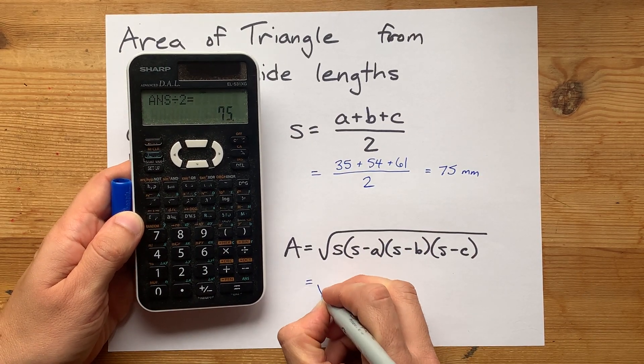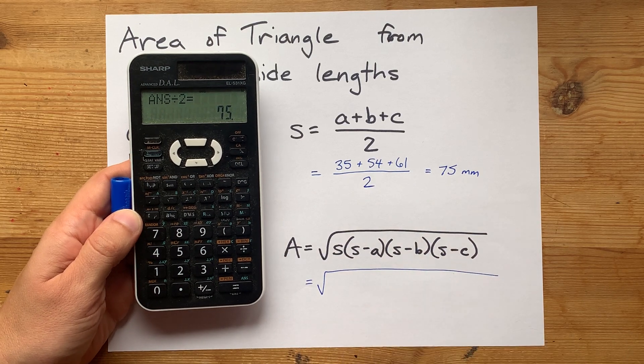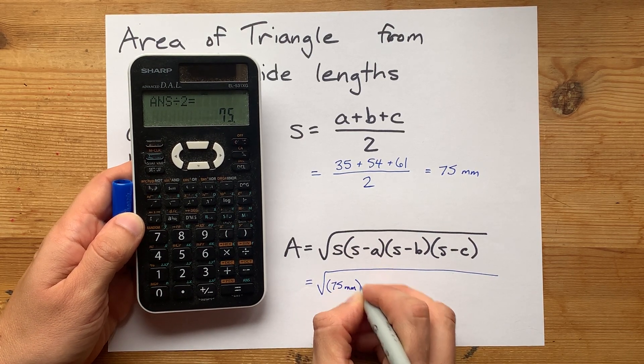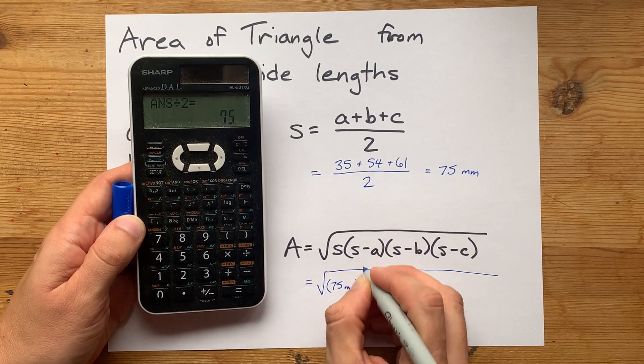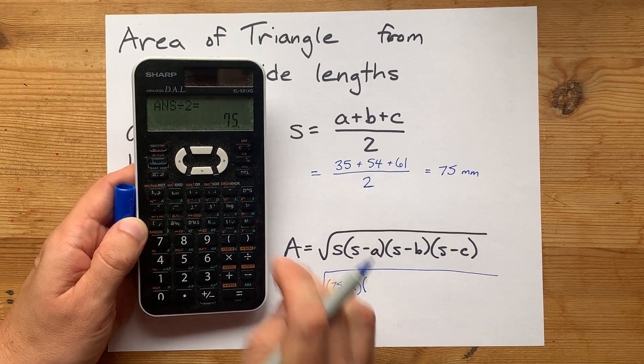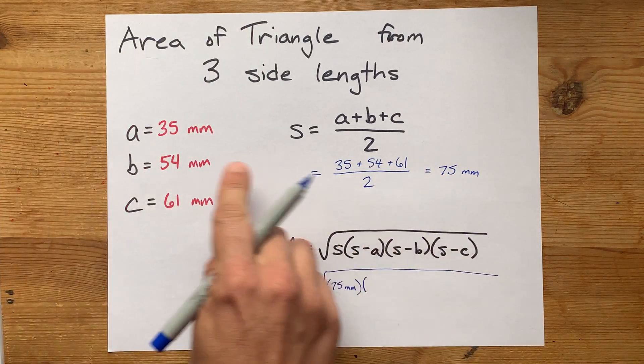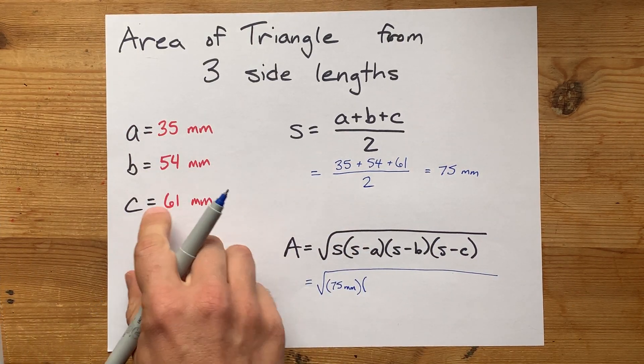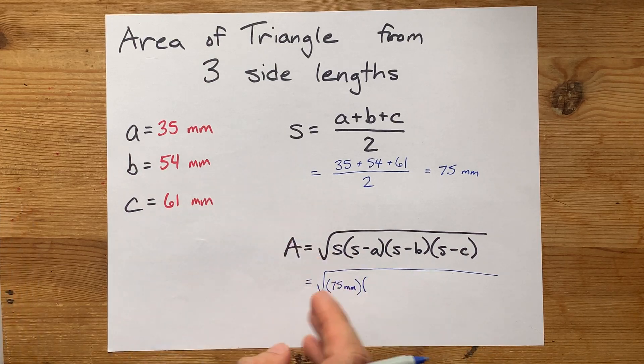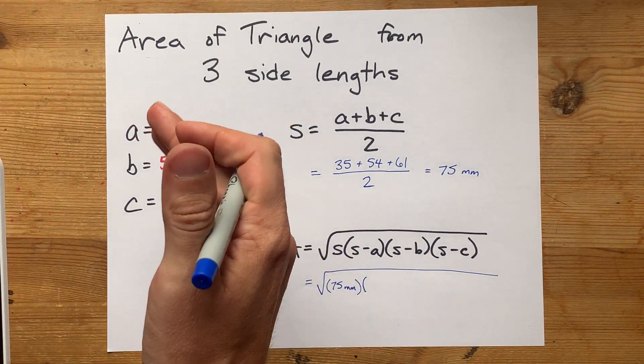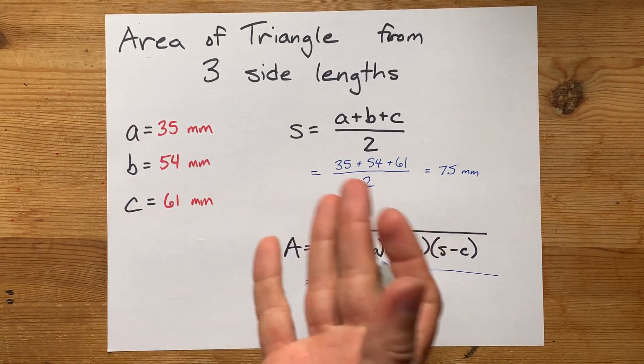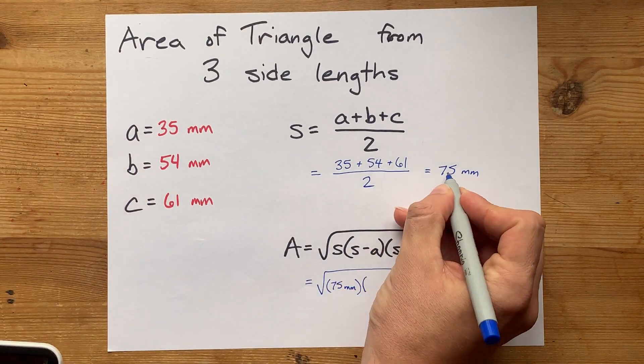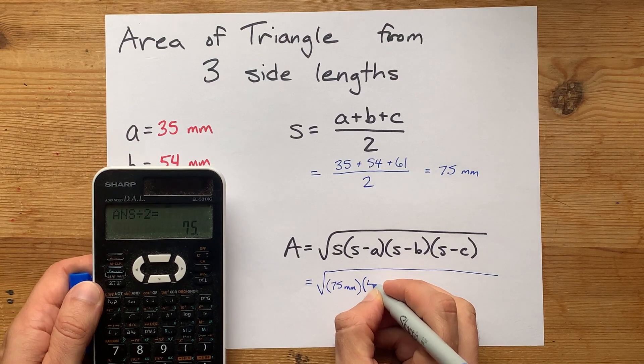Now we're going to use that in Heron's formula. Here, I have 75mm for my s. s minus a is going to be that 75 less whatever side length a is. And it doesn't matter what order you put these in. Any of them can be a or b or c. Just make sure you use each one once and not one of them twice or something. 75 minus 35 is 40.